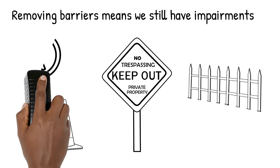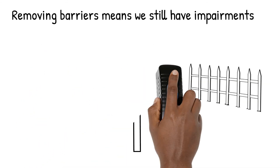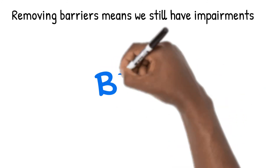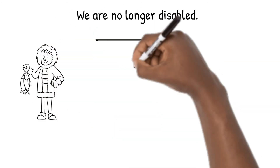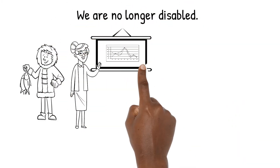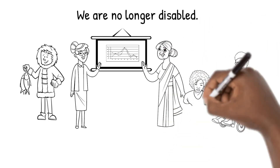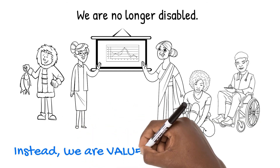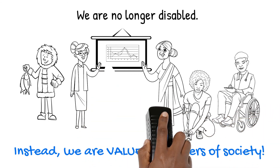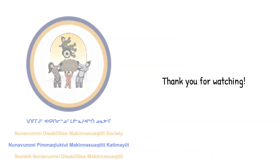An image of a hand erasing construction barriers appears. Removing barriers means we still have impairments. But images of diverse adults appear. We are no longer disabled. Instead, we are valued members of society. A thumbs up image appears. Thanks for watching.